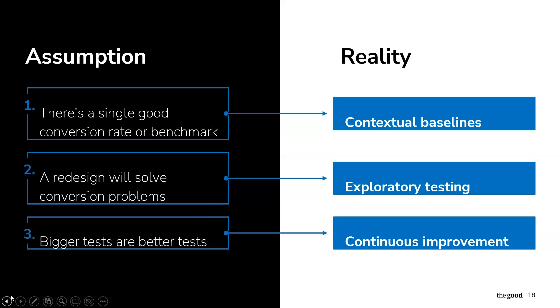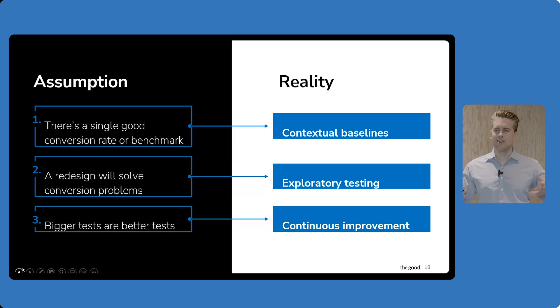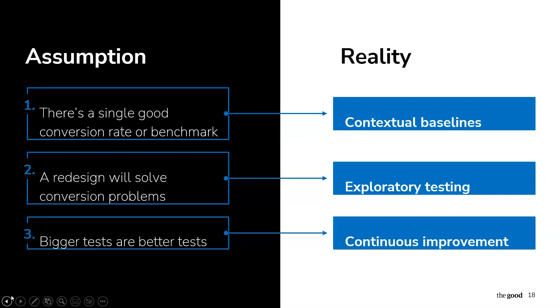First, contextual baselines need to be used instead of generic benchmarks. You often hear, 'oh, the average conversion rate for e-commerce is 2%.' The reality is it's widely different across the products you're selling and the audience you're selling to. We've worked with everybody from large boat manufacturers - Mastercraft boats sells $100,000 speed boats. Their conversion rate is way less than 2% because they're selling to a very specific audience at a very high price point. We've also worked with companies selling t-shirts at much lower price points - they sell at much higher conversion rates. My point is use your own data. Stop looking at what the trend lines are. The only trend that matters is your trend.